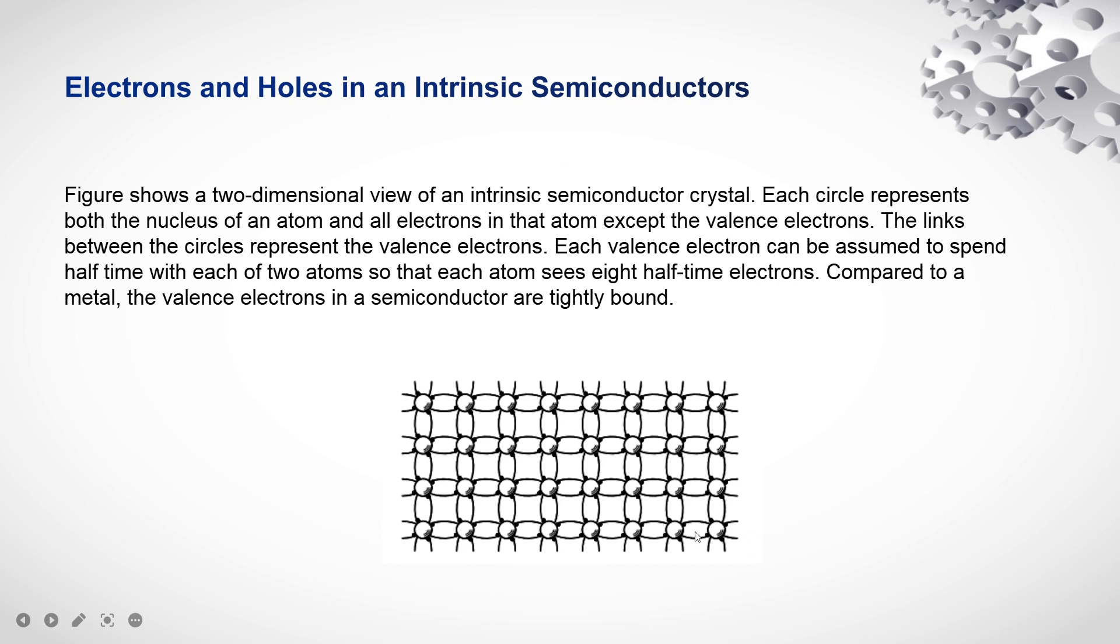The electrons and holes in an intrinsic semiconductor. As you can see, this is the two-dimensional view of intrinsic semiconductor crystal. Each circle in this diagram represents the nucleus of an atom. All the electrons in an atom are called valence electrons. These are the bonds of the valence electrons which are tightly bonded in case of intrinsic semiconductor.